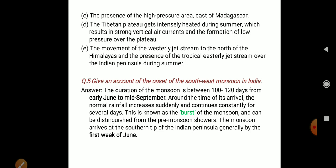The movement of the westerly jet stream to the north of the Himalayas, and the presence of the tropical easterly jet stream over the Indian Peninsula during summer, are also important factors. The duration of the monsoon is between 100 to 120 days, from early June to mid-September.